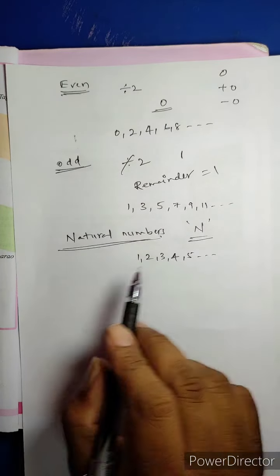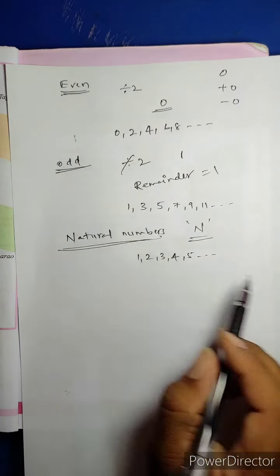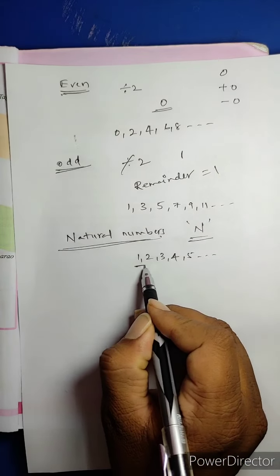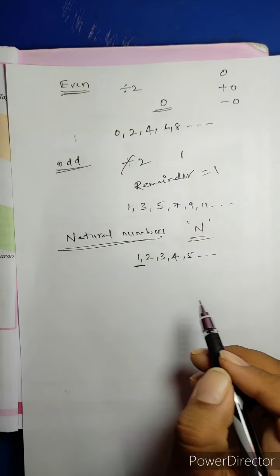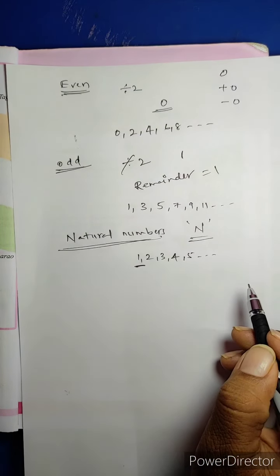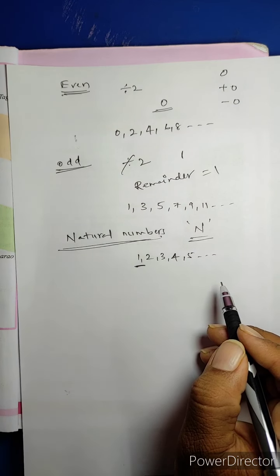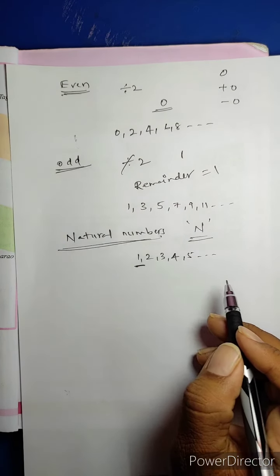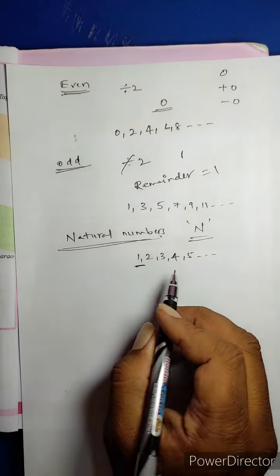N = {1, 2, 3, 4, and so on}. In Natural Numbers, the smallest number is 1. The biggest number is infinite — we can't say which is the biggest natural number because it goes to infinite numbers.